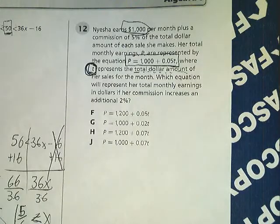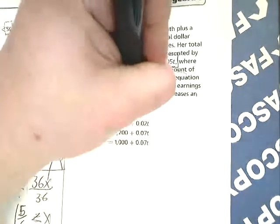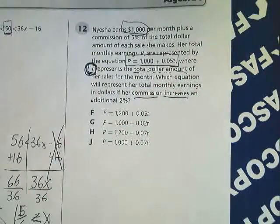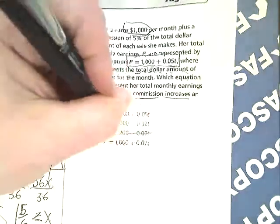Because this says that the commission increases. So anything other than $1,000 here is wrong. So that's out and that's out.